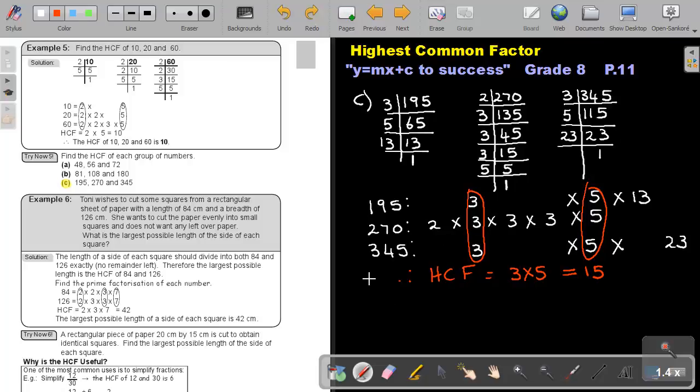I can also do it with index notation. If I say 195, it will be 3 times 5, times 13. And if it's 270, it will be 2 times 3 to the power of 3 times 5. And then, 345, it will be 3 times 5, times 23. Now, can you still remember? We only write down the basis that's in all three numbers. And if you look, you will see there's a 3, there's a 3, there's a 3. So, it will be 3, and we take the smallest exponent. There's a 1, 1, 3. So, the smallest will be 1. Look, there's a 5, 5, 5. So, I take 5, and I take the smallest exponent, it's 1. And then, 3 times 5 will be 15, exactly the same as the top one.